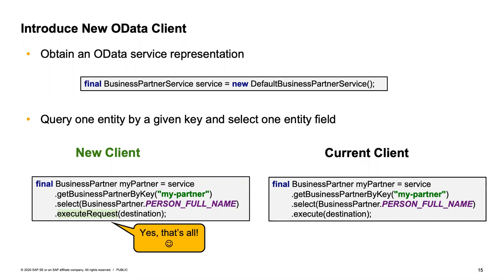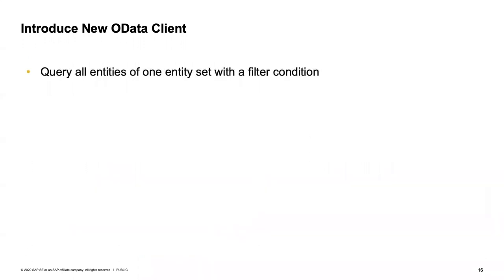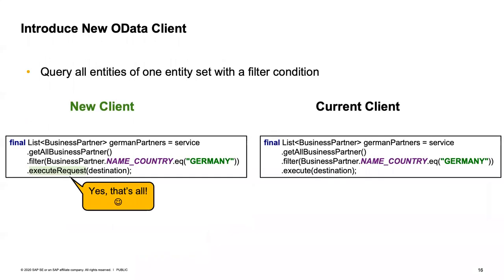In the next use case, we are fetching entities based on some filter condition. Here we are querying the business partner service with a filter operation on one of its properties, which is set to Germany. You can see that we can build the same queries very easily with the new client — the only thing that changes is again the execute method, replaced with executeRequest.